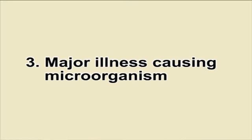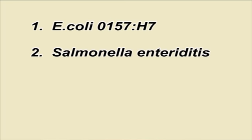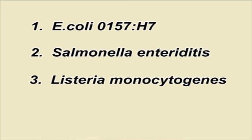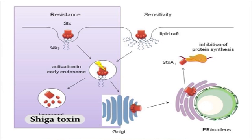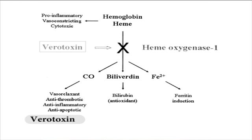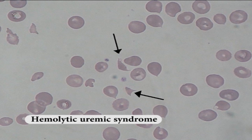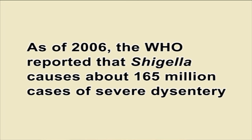Major illness-causing microorganisms. According to the Center for Disease Control, the top 4 emerging pathogens are E. coli O157:H7, Salmonella enteriditis, Listeria monocytogenes and Campylobacter jejuni. Some strains of Vibrio cholerae cause the disease cholera; Vibrio cholerae is a facultative anaerobic organism. Both Shiga toxin and Verotoxin are associated with causing hemolytic uremic syndrome. As of 2006, the WHO reported that Shigella causes about 165 million cases of severe dysentery.